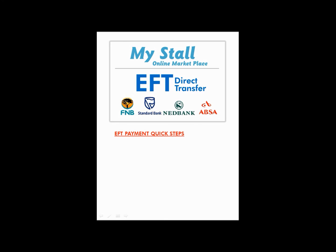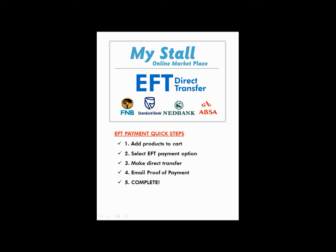So to quickly summarize the steps: First, add products to a cart. Second, select the EFT payment option. Then make a direct transfer from your bank account to mystore using the details provided. The fourth and most important step is to then email proof of payment. Once you have done that, the process is complete and you can wait excitedly for your order to arrive.